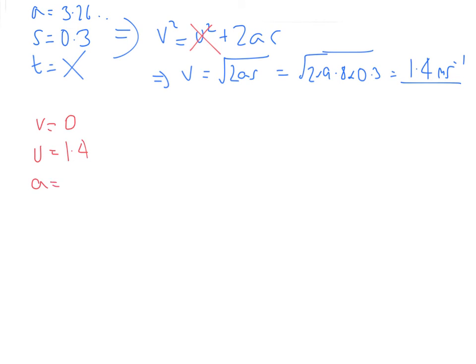We know the u is this value from the previous question. A is going to be gravity, and it's acting against it, so it's going to be a minus. Your s is going to be your unknown. And t we don't know.